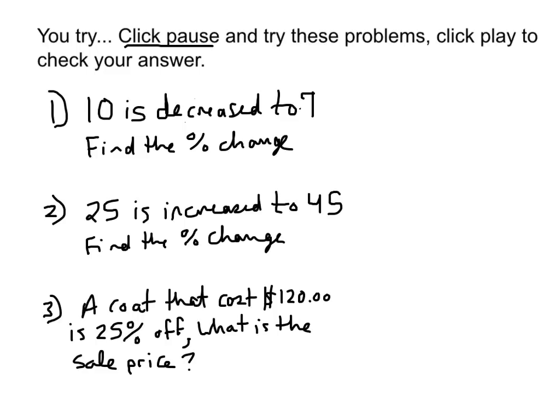Number one, 10 is decreased to 7. Find the percent change. So to find the percent change, we find the amount of change over the original amount. 10 minus 7 is 3 over 10.